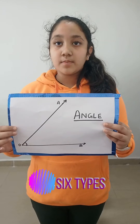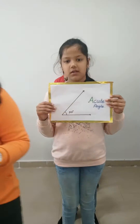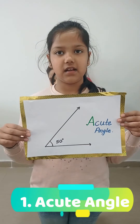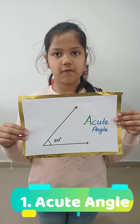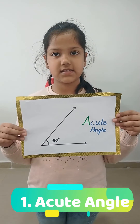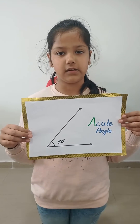There are 6 types of angles. Acute angle: an angle the measure of which is more than 0 degrees but less than 90 degrees is called an acute angle.